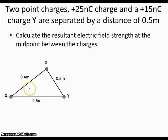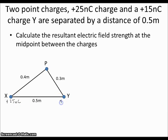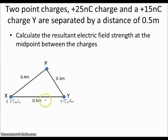For our first problem, I have two point charges: one of +25 nanocoulombs and one of +15 nanocoulombs. The +25 nanocoulombs is here and the +15 nanocoulombs is here, separated by a distance of 0.5 meters. The problem is asking us to calculate the resultant electric field strength at the midpoint, which is 0.25 meters from each charge.